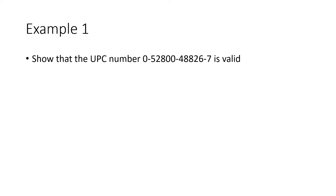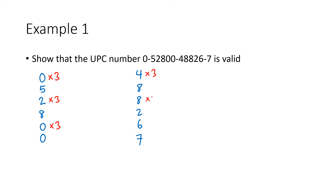Let's see an example. We have a UPC number here — let's check that it's valid. We take every other digit and multiply by three, keeping a running total. The digits are 0, 5, 2, 8, 0, 0, 4, 8, 8, 2, 6, 7. Every other digit gets multiplied by three, and the other digits are multiplied by one. The weight pattern is 3, 1, 3, 1, 3, 1, and so on. Writing the ones helps make sure we're on track with the pattern.